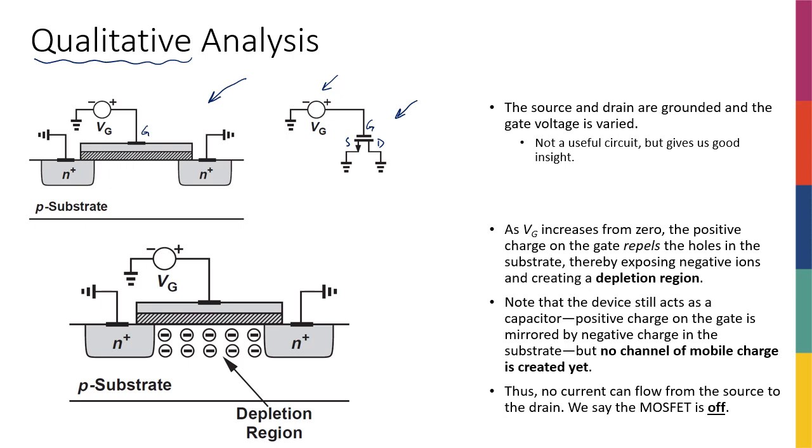Now, as mentioned before, when we connect some voltage to the gate, what happens is that we are going to basically create a channel under the gate.